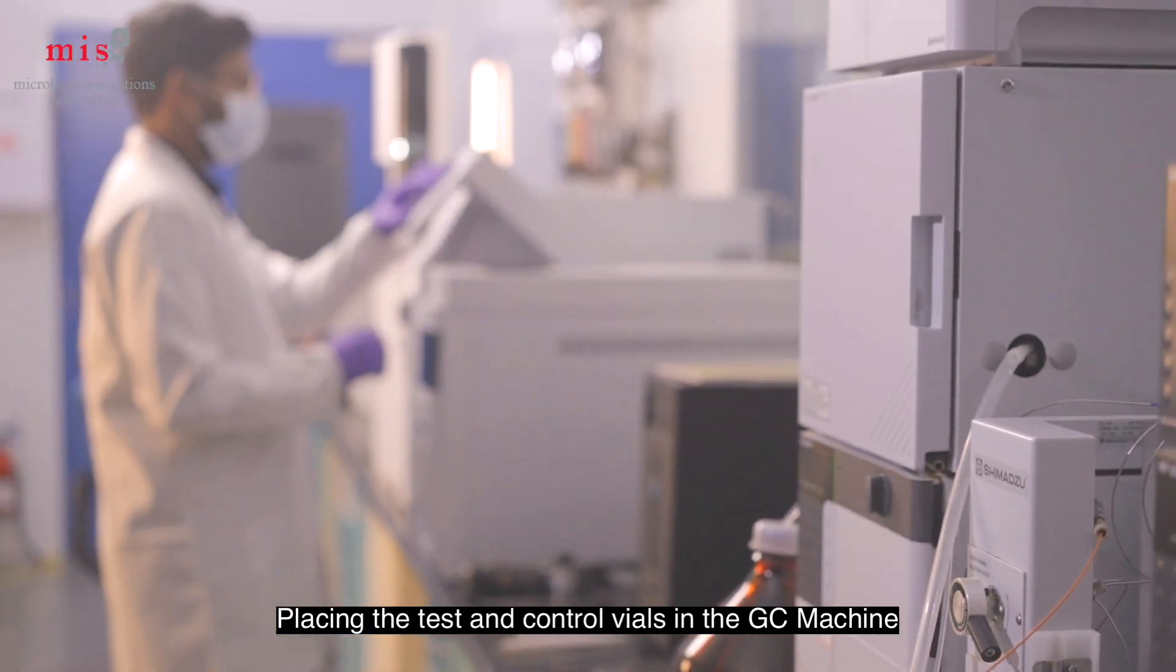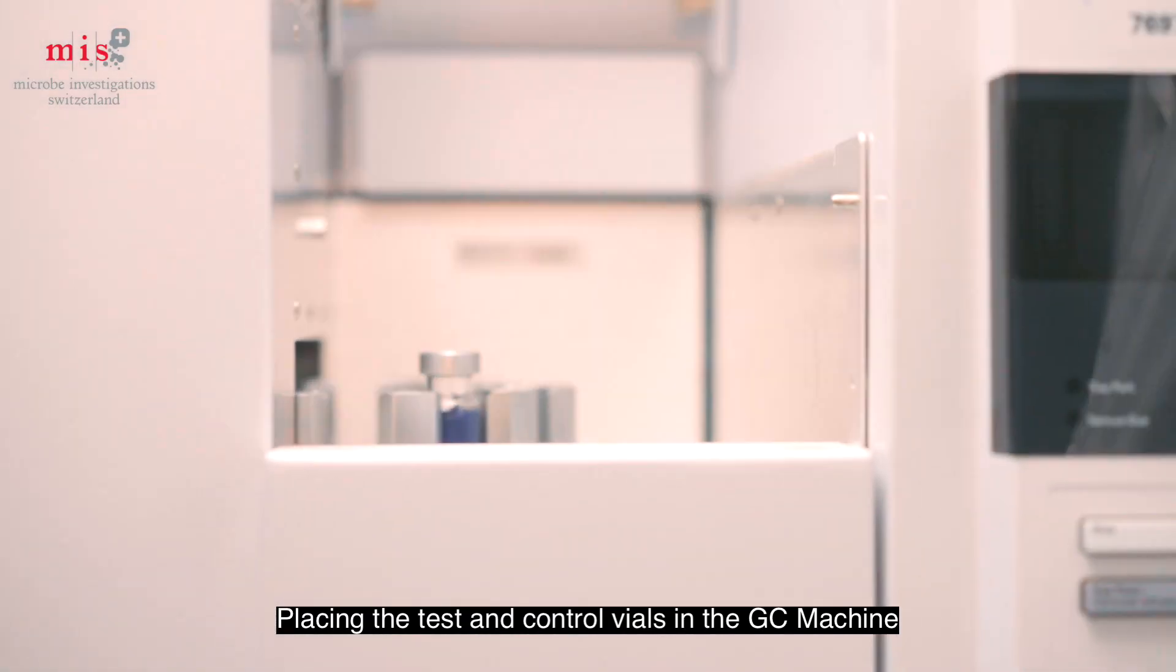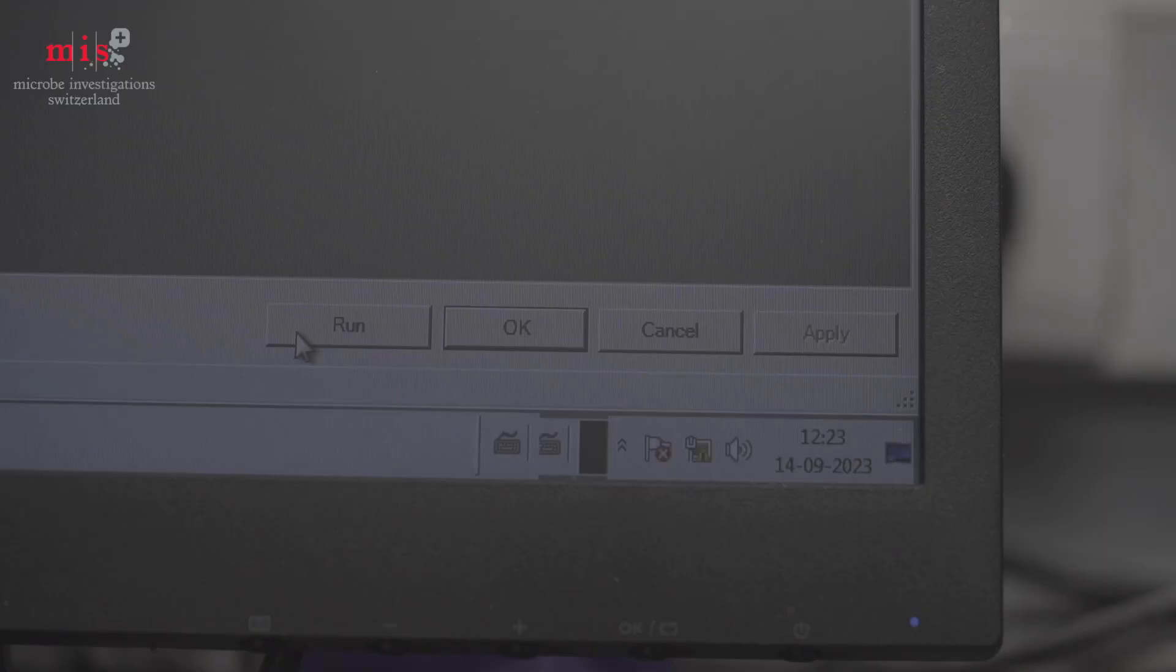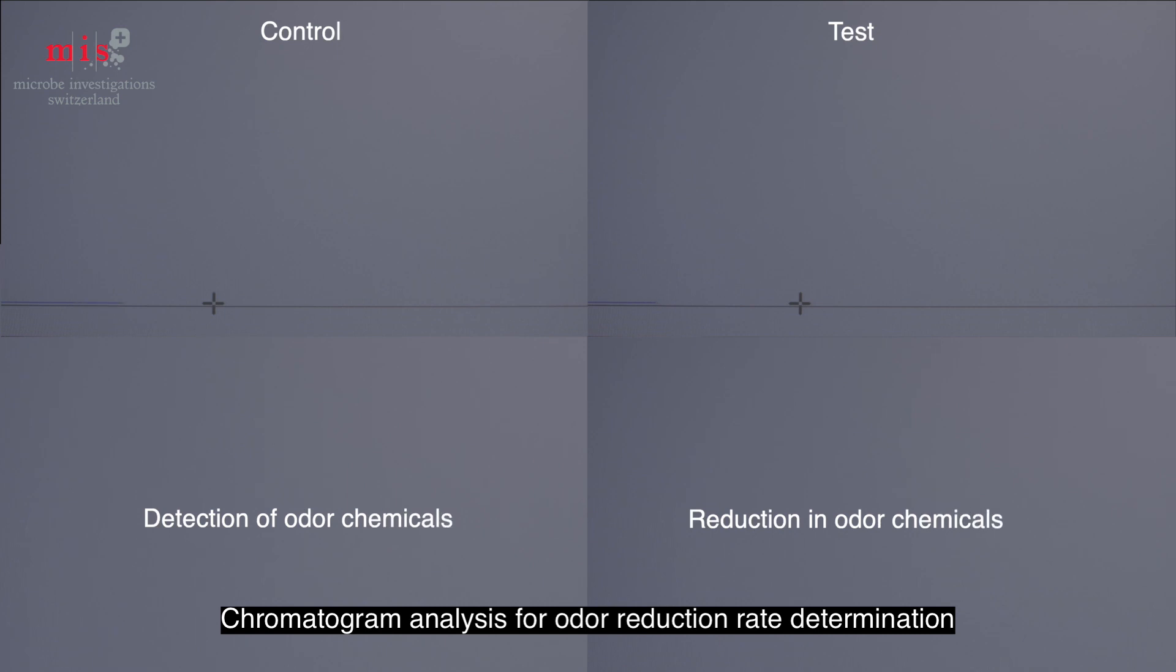Then, the vials are transferred and exposed to a high temperature in the column of a gas chromatography machine. Odor reduction rate is determined by analyzing the chromatograms of the released gases from control and test vials.